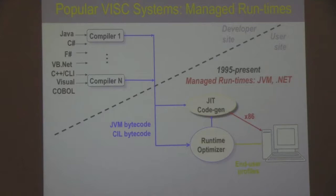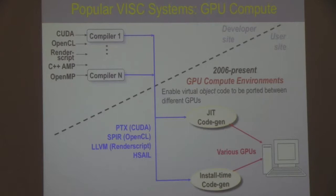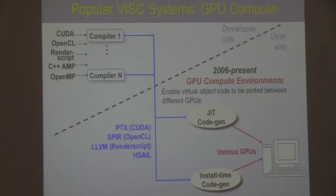Another example in the GPU computing domain: languages like CUDA are compiled into a virtual instruction set — CUDA uses one called PTX — and this virtual object code is compiled to the particular GPU at load time in a device driver. The major benefit is that it allows hardware designers to evolve the GPU architecture with much greater freedom, because they don't have to be binary compatible with all applications. As far as I know, GPUs are the only ones that actually take advantage of this.